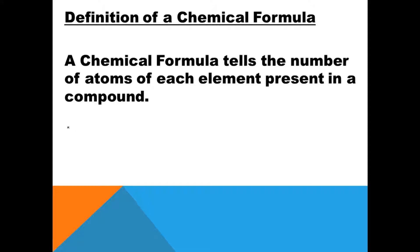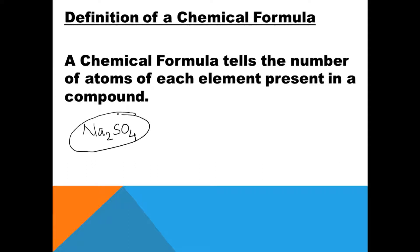I have already explained in my earlier videos how to find the number of atoms present in a compound, but I'll do it here as well. If I say sodium sulfate — Na2SO4 — this is the chemical formula of an ionic compound where sodium has two atoms, sulfur has one atom, and oxygen has four atoms. So a chemical formula tells us the number of atoms of each element present in a compound.